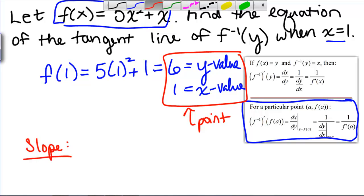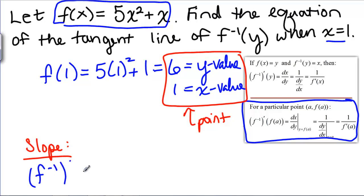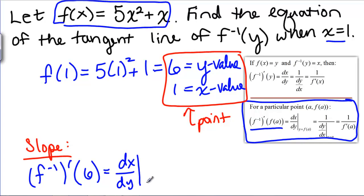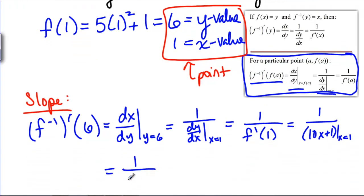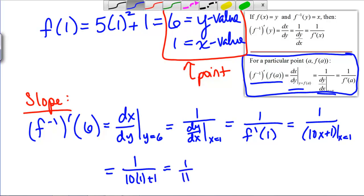Now we need a slope. The slope we're looking for is F inverse prime when Y is 6. F inverse prime at Y equals 6 is the same as DX DY evaluated at Y equals 6, which equals 1 over DY DX evaluated at X equals 1 — which is 1 over F prime of 1. F prime of 1 is 1 over 10X plus 1 evaluated at X equals 1, which is 1 over 10 times 1 plus 1, giving us 1 over 11. Now we have our slope.